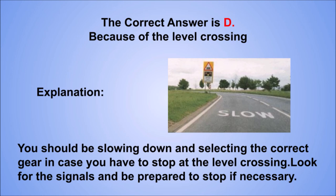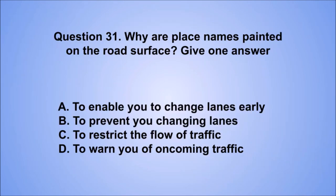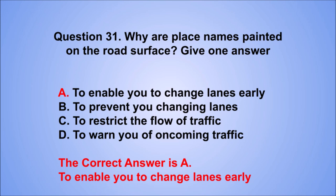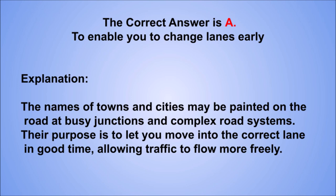Question 31. Why are place names painted on the road surface? Give one answer. A. To enable you to change lanes early. B. To prevent you changing lanes. C. To restrict the flow of traffic. D. To warn you of oncoming traffic. The correct answer is A, to enable you to change lanes early. The names of towns and cities may be painted on the road at busy junctions and complex road systems. Their purpose is to let you move into the correct lane in good time, allowing traffic to flow more freely.